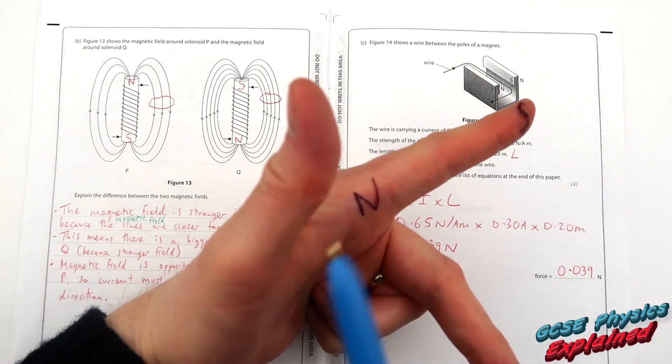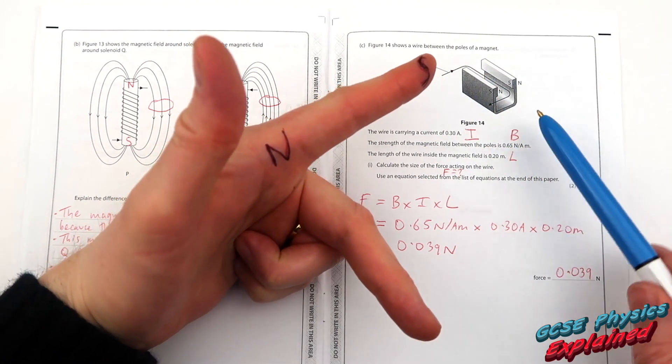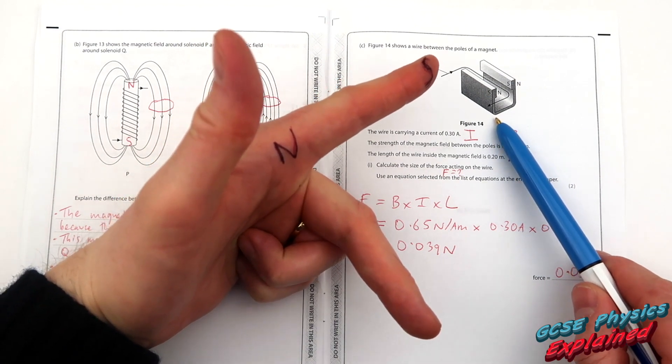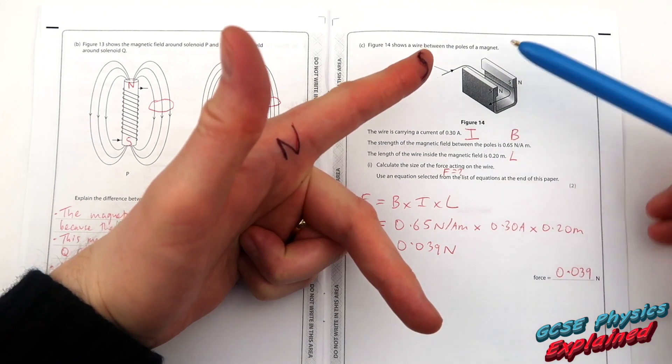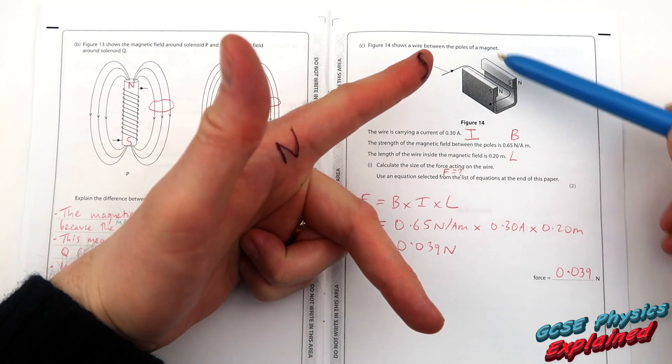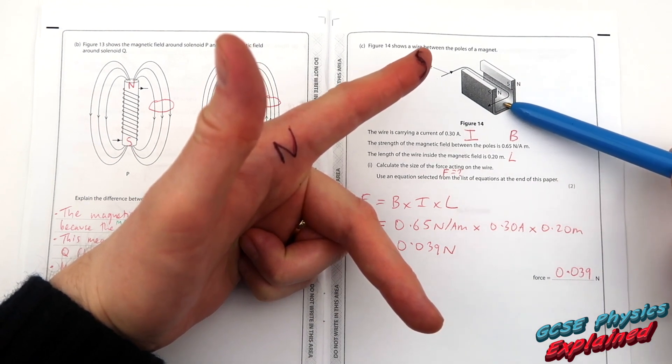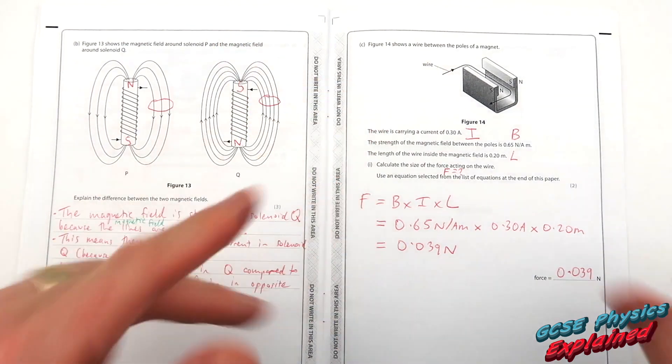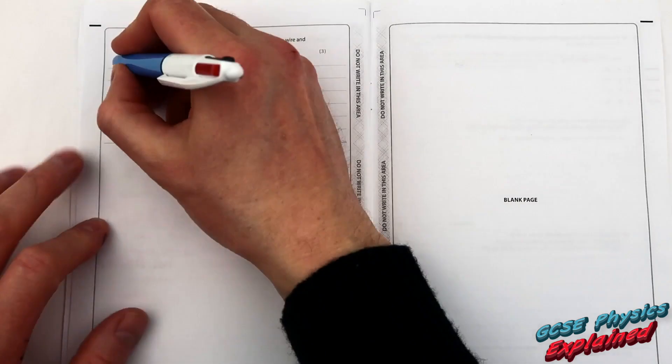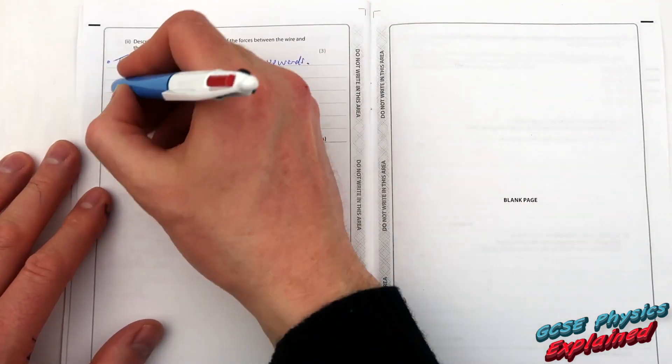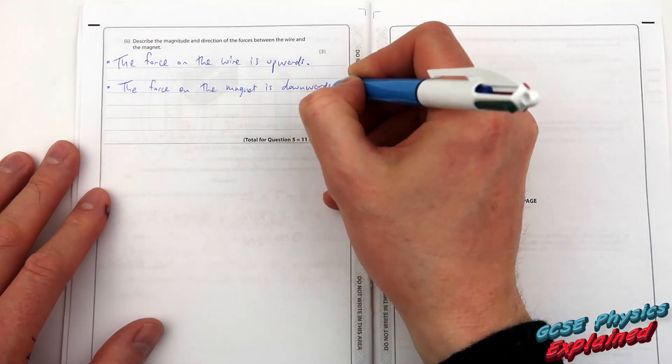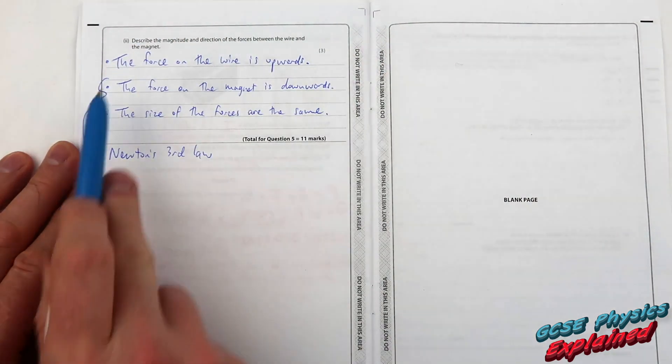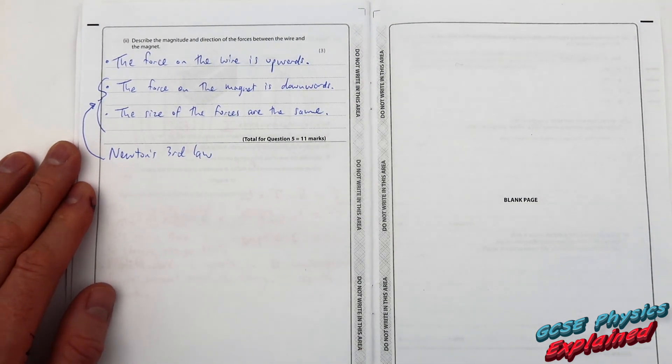Now it asks you not only what is going to happen to the wire it's also asking you what's the force going to be on the magnet. Now that is Newton's third law for every action there is an equal and opposite reaction. So if there is a force on the wire going upwards then there will also be a force on the magnet going downwards and the forces will be the same size but will be in the opposite direction. And these two points of Newton's third law not that you'll get any extra marks for that but I just thought you might like to know.